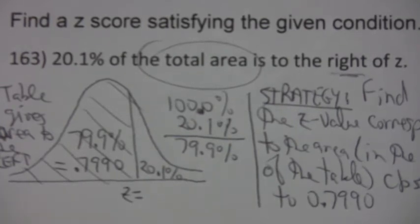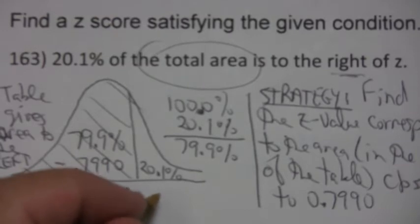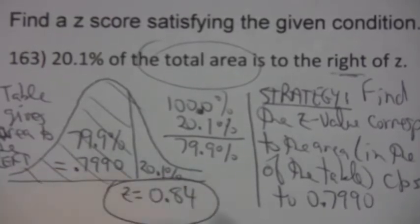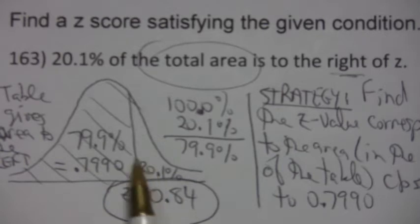So the answer to the question, that z value is, as close as I can get it to using a table, 0.84. That's the z value that breaks it into this area, 20.1% to the right and 79.9% to the left.